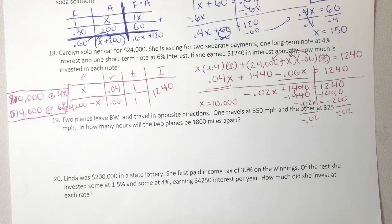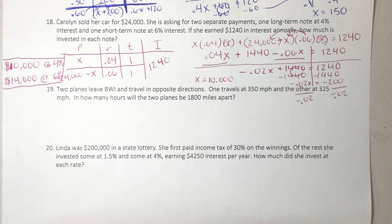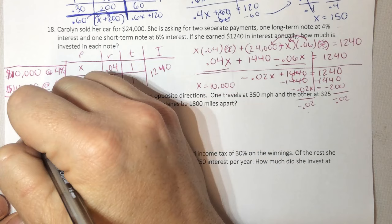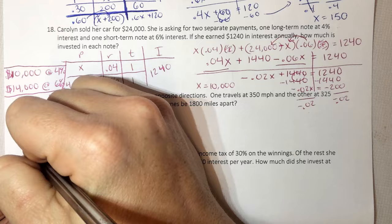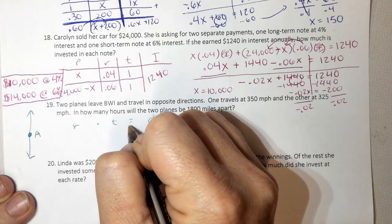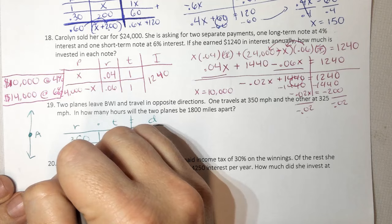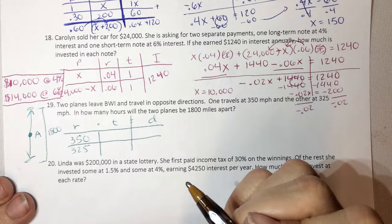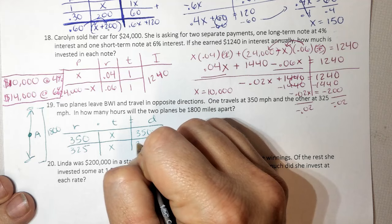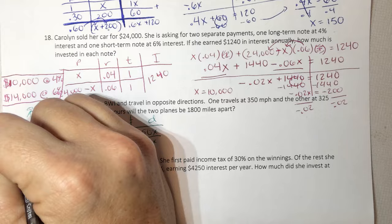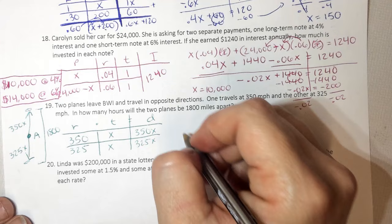Two more, we're almost done. Two planes leave BWI and travel in opposite directions. When you see that, it's just a certain airport. So we have airport, we have two planes that go opposite directions. So again, we'll just claim north and south. So right away, we know this is motion, rate times time equals distance. So it tells me one travels 350 miles per hour and the other one at 325. And how many hours will the two planes be 1,800 miles apart? So we want to know when this plane and this plane are 1,800. So it's going to be set up just like the other one. And I don't know time, so we're going to assume it's the same.